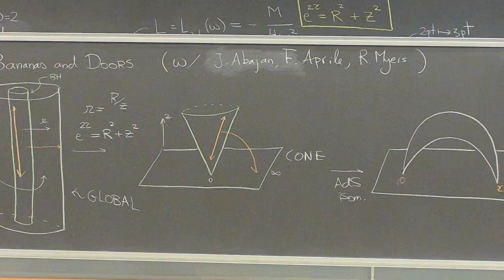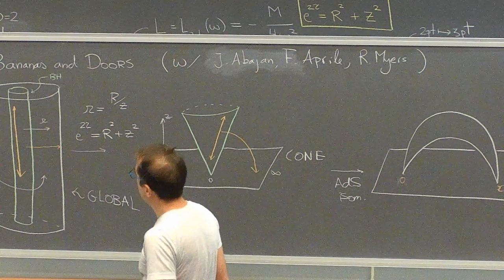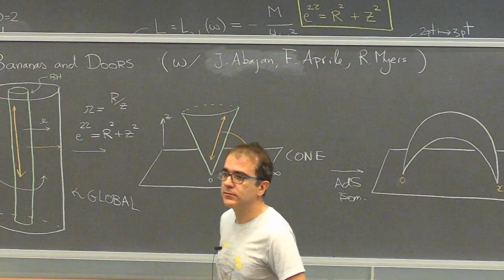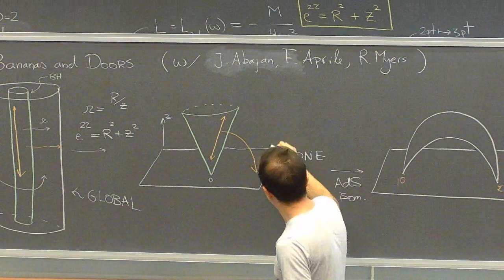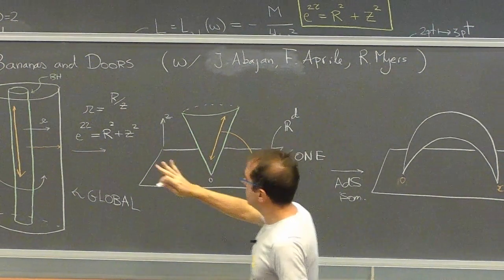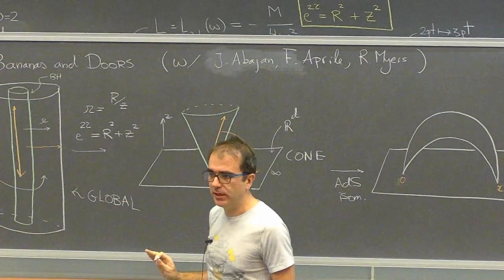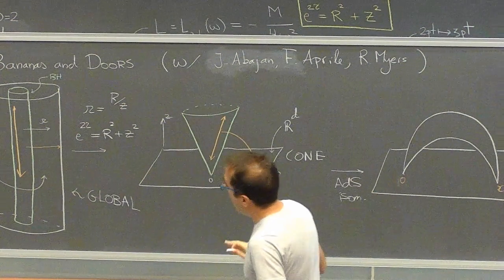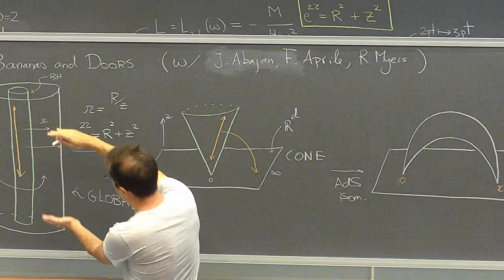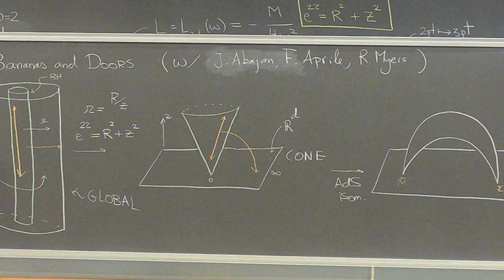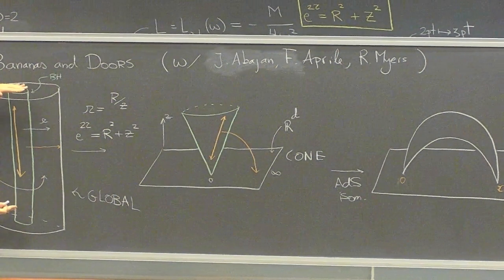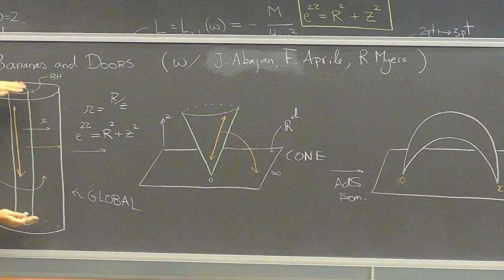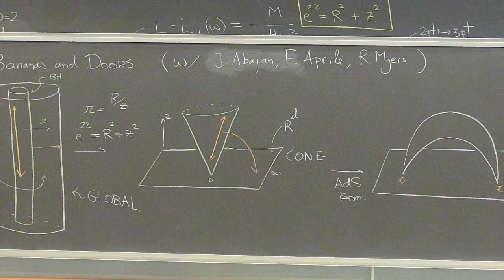A question from the audience: once you've got the global space the boundary is S³ × S¹; by doing this change of variables we go to a frame where the boundary is R^d. The clarification: normally when considering the Euclidean black hole we make the circle periodic, fixing the temperature by requiring no singularity at the horizon. Here, we are NOT making that identification.